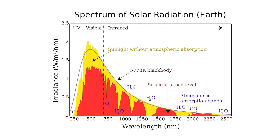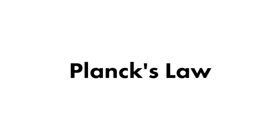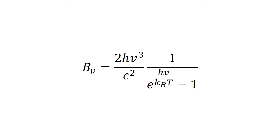Hot objects here on Earth exhibit these behaviours, like heating metal and lava flows. The spectral distribution of thermal energy is described by Planck's law. This determines the specific spectral energy density of the emission at each wavelength and a particular temperature, and looks like this.